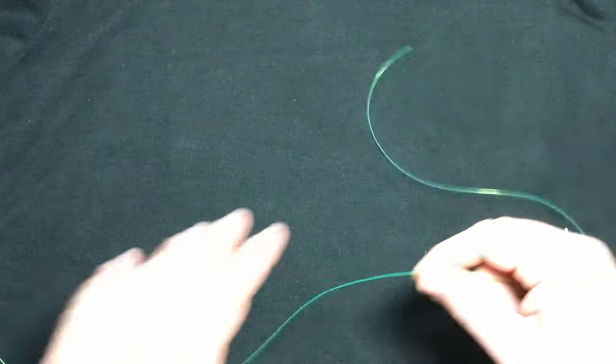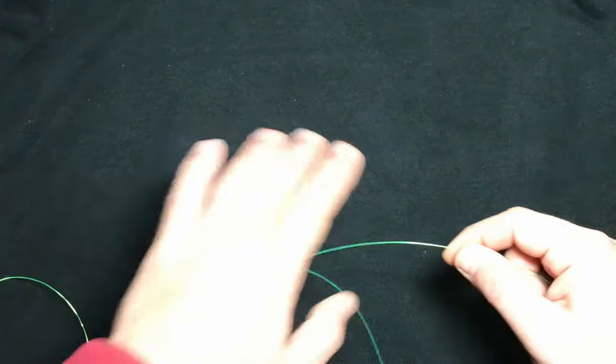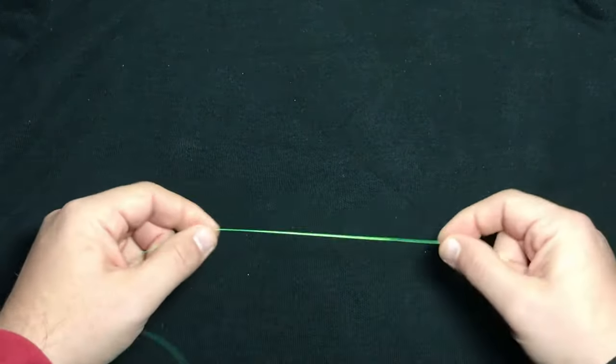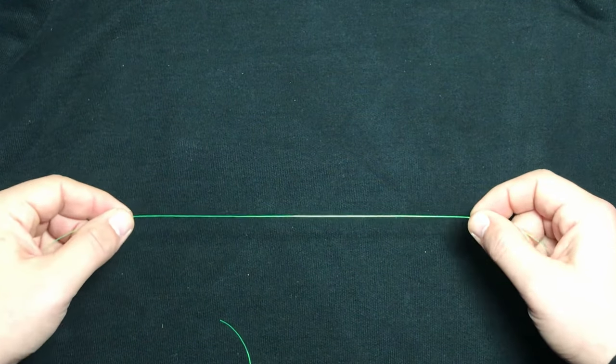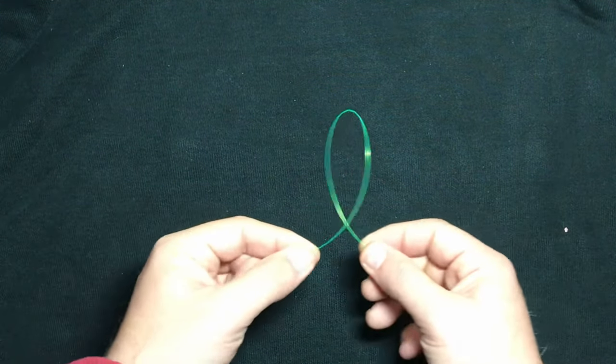So what we're going to do, and the whole key to tying two hooks onto one line, is to tie a dropper loop knot. And so we're going to kind of start somewhere in the middle.